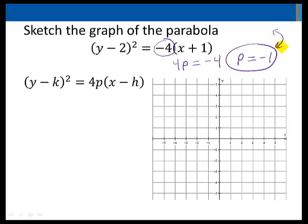So what do we need to know to sketch this parabola? We need to first look for the vertex. To find the vertex, notice that I have x minus h. My h for the vertex will be -1, and for the y value of the vertex, I have y minus 2, so k will be equal to 2. So my vertex is at (-1, 2).